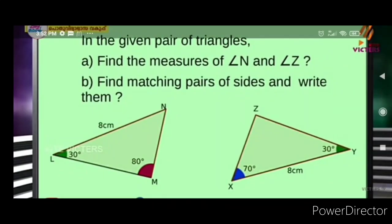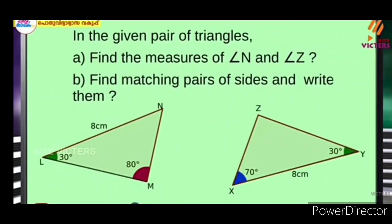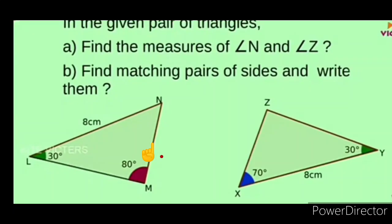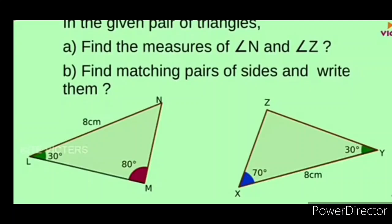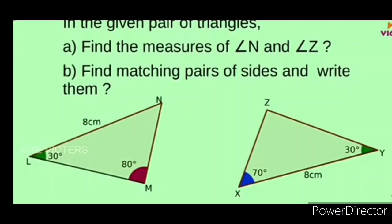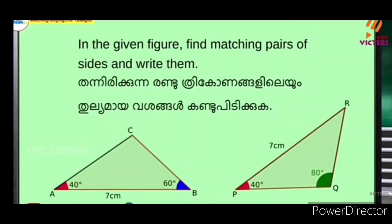Find the matching pairs of sides and write them. The opposite side is MN. The opposite side is XZ. The opposite side is LM. The opposite side is YZ. Find the matching pairs of sides including the two triangles objective.